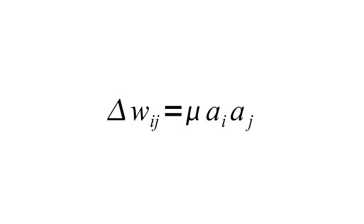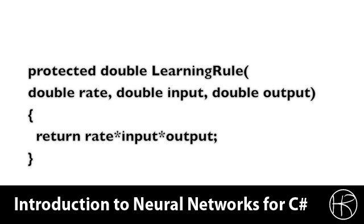Now we're going to take a look at how this would be implemented in actual code. Here you see the code necessary to implement Hebb's Rule. A function named learning rule is provided that accepts three inputs: the rate, the learning rate, which is the mu variable from before, the input and the output. The implementation is very simple. The rate is multiplied by the input by the output. This will return the Delta that is necessary over the weights between the input and the output.